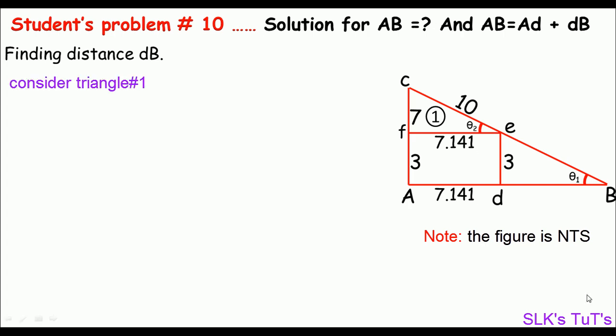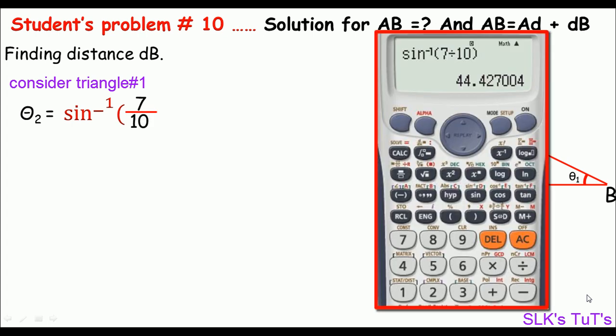From triangle 1, all sides are known, so we can calculate theta 2 from trigonometric ratios. Theta 2 equals the sine inverse of the perpendicular of triangle 1, which is 7 meters, divided by the hypotenuse, which is 10 meters. By short math, we get theta 2 is 44.427 degrees.